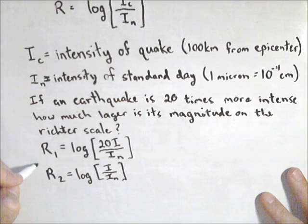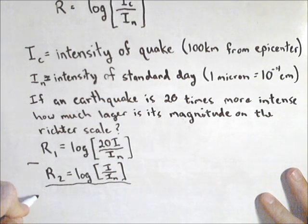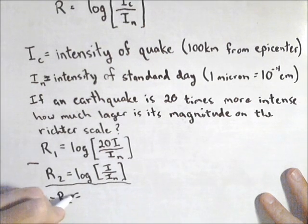Now, and this is common with these kinds of problems, we're going to subtract the two equations because what we want is the difference in their magnitudes on the Richter scale. Let's see what happens when we subtract them.